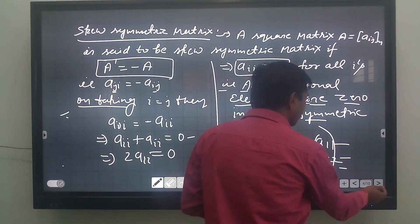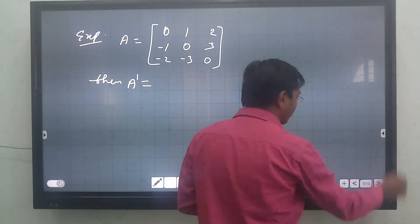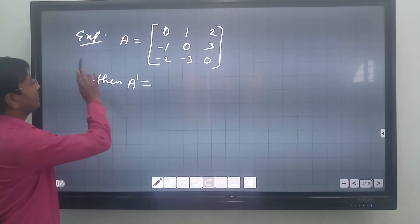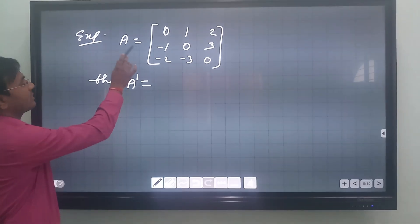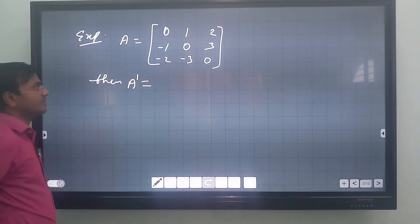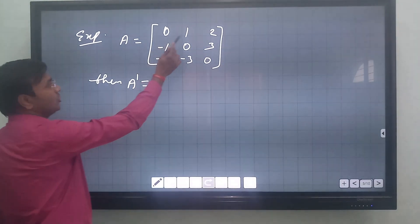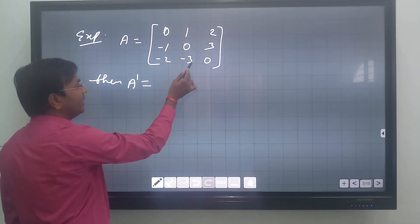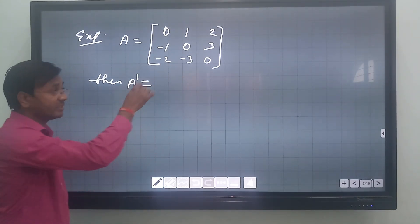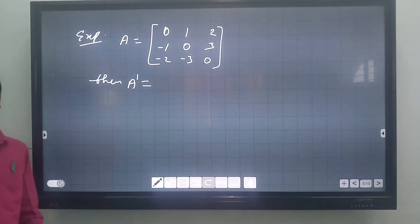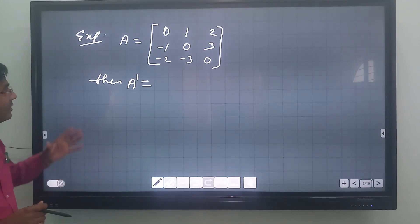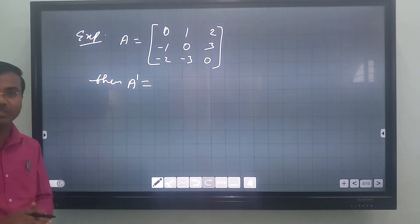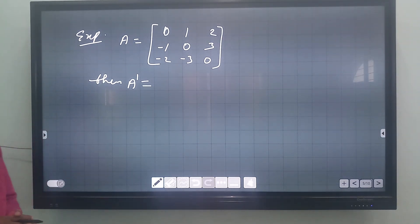Let us consider one example. Let A = [[0, 1, 2], [-1, 0, 3], [-2, -3, 0]]. This is the particular matrix which we will use to prove skew-symmetric.